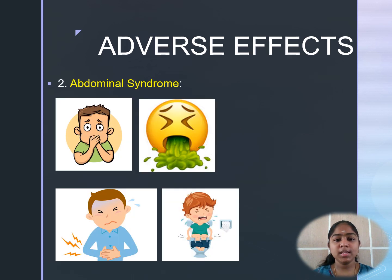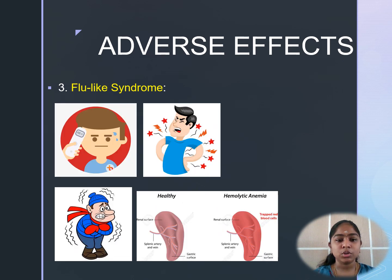Abdominal syndrome is another adverse effect, with nausea, vomiting, and abdominal cramps with or without diarrhea. A flu-like syndrome characterized by fever, body ache, chills, and hemolytic anemia symptoms is more common with intermittent dosing regimens.